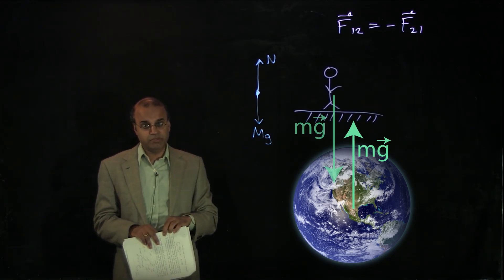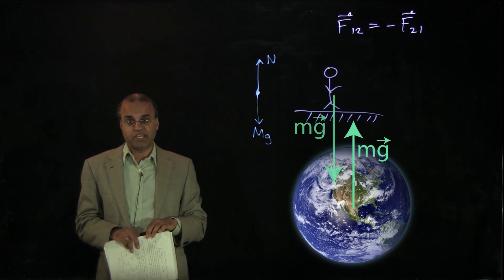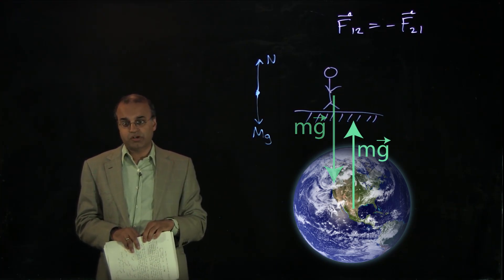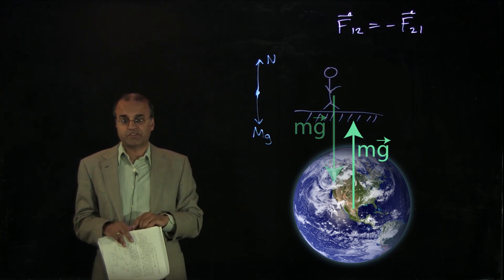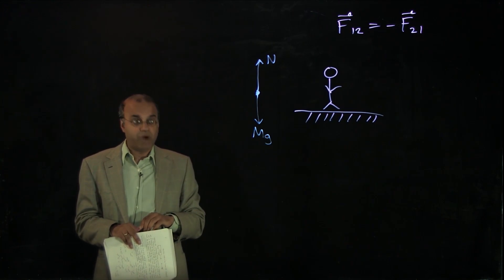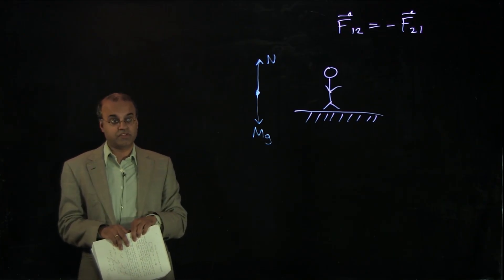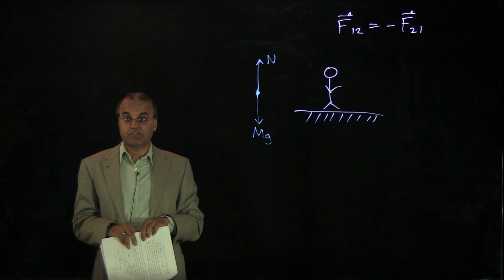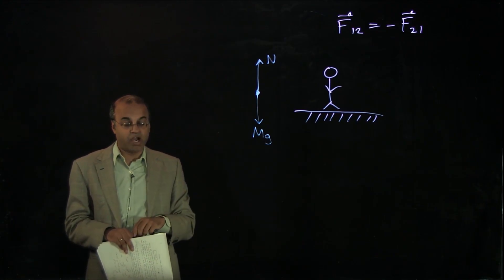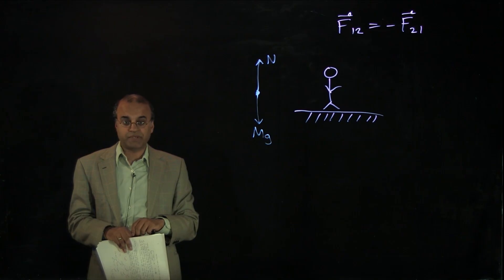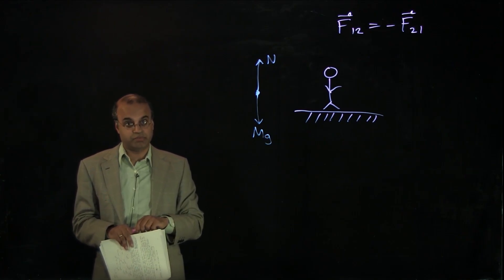The masses are extremely different even though the forces are the same. So the acceleration of the Earth due to this person's mass is negligible because the Earth is so much more massive than the person. But Newton's third law tells us that there is a tiny acceleration on the Earth due to the person. That is the third law pair for gravity. Mg downward exerted by the Earth on the person is paired with mg upward on the Earth exerted by the person.